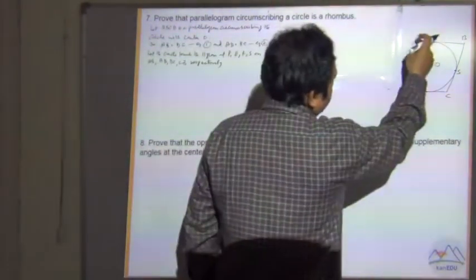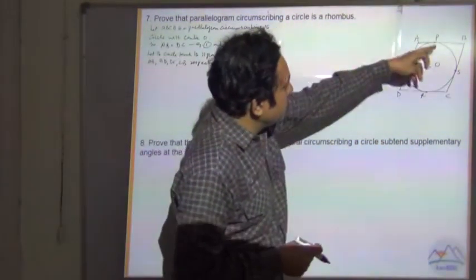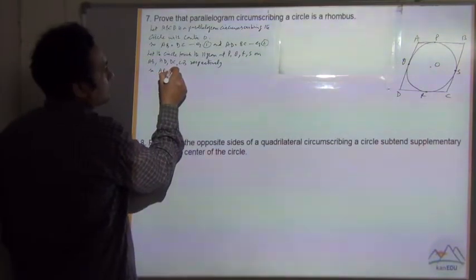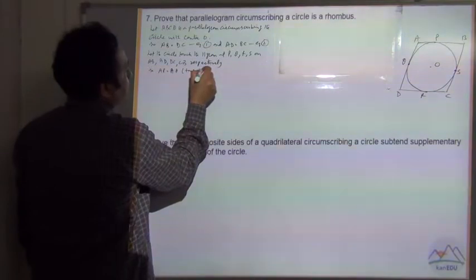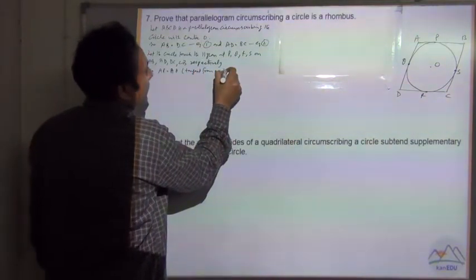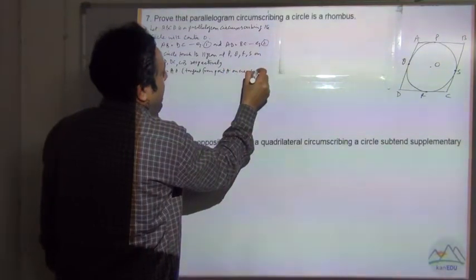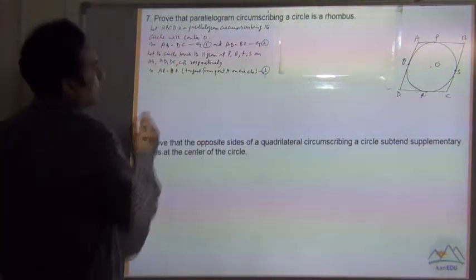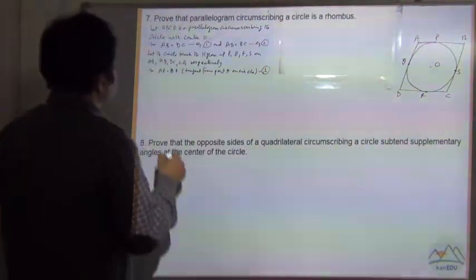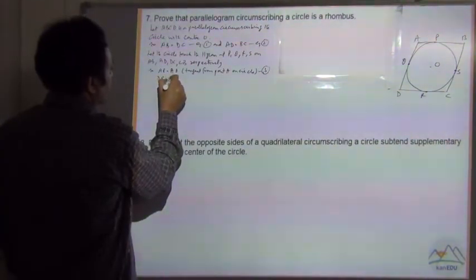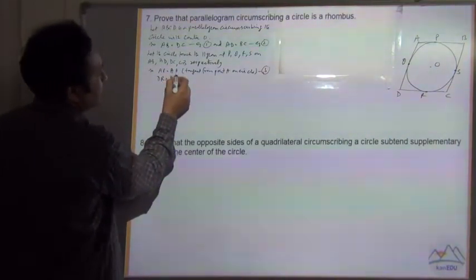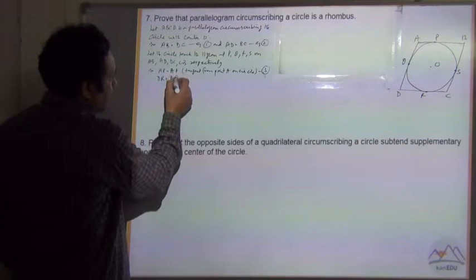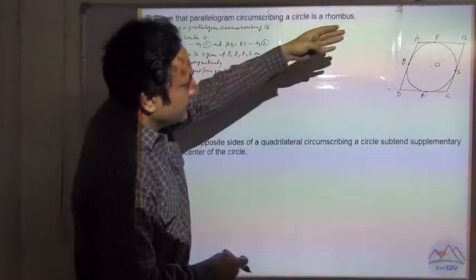Which means AP is equal to AQ, because AP and AQ are tangents from point A on the circle — say equation 3. Similarly, DR is equal to DQ, tangent from point D on the circle — say equation 4.